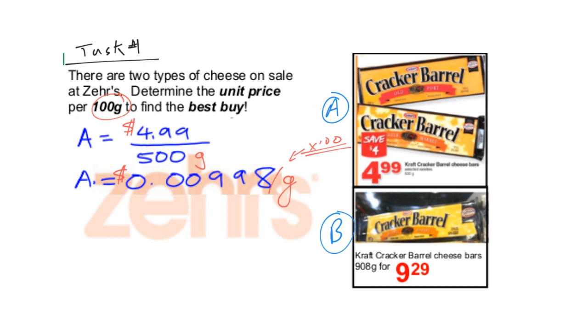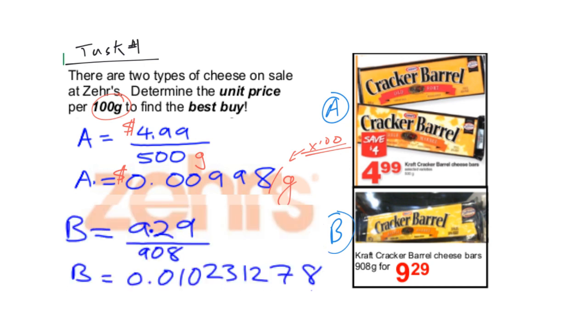For B, for number B, this is what we get. We end up with B being $9.29 divided by 908 grams. You divide those out, and you end up with this decimal, which means it's 0.0 blah, blah, blah per gram.